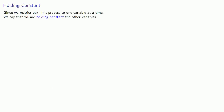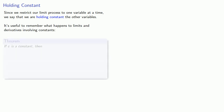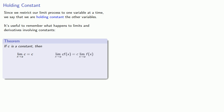Since we restrict our limit process to one variable at a time, we say that we are holding constant the other variables. To that end, it's helpful to remember what happens to limits and derivatives involving constants. If c is a constant, one of our basic limit theorems is that the limit of a constant is the constant, and the limit of a constant times a function is the constant times the limit of the function.